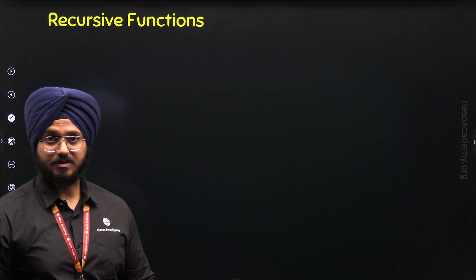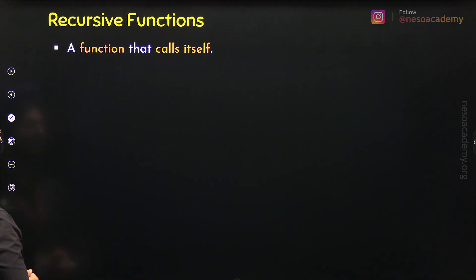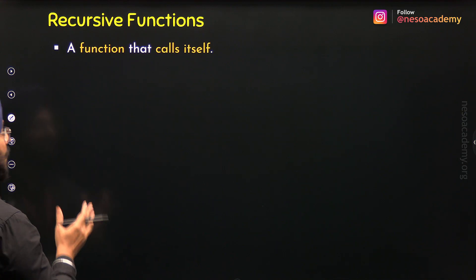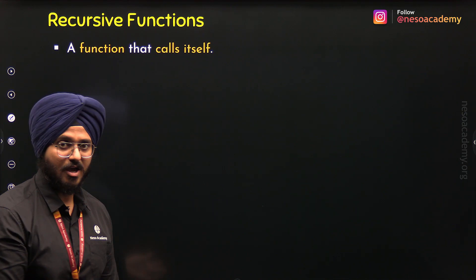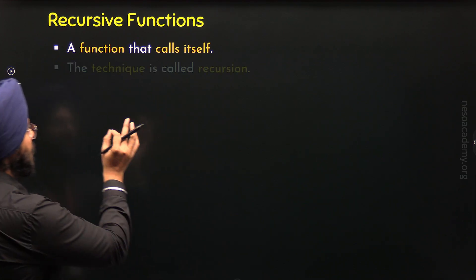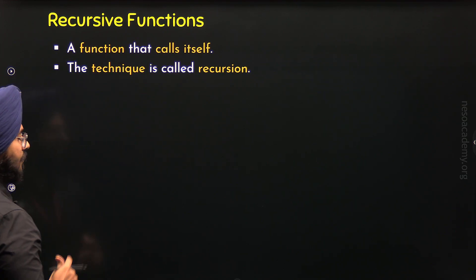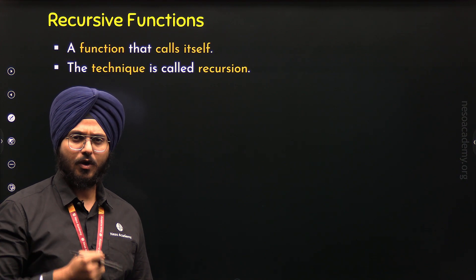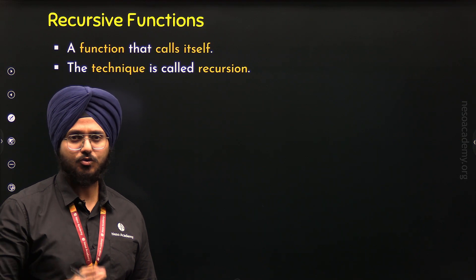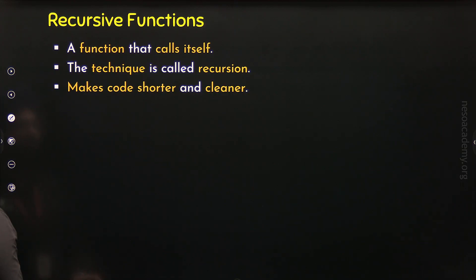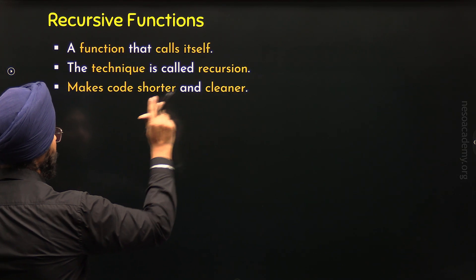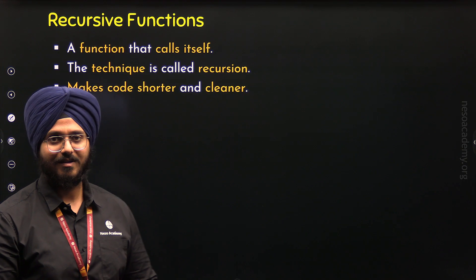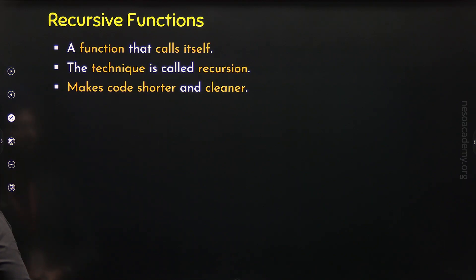So what are recursive functions? A recursive function is a function that calls itself — it has the capability to call itself within its own body. The technique is called recursion. Think of recursion as the alternative to loops; through recursion we can repeat something, and it makes our code shorter, cleaner, and more understandable.